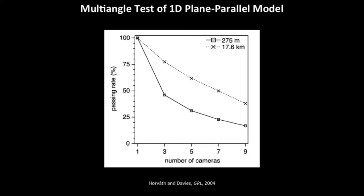You can test what percentage of clouds actually behave as plane-parallel. If you have a traditional instrument with one measurement, you just have to assume it works all the time. With two additional cameras, it throws out almost 50% of clouds that can't be fit within 5% radiance. Going to all nine cameras, only about 20% of clouds are plane-parallel within 5%.